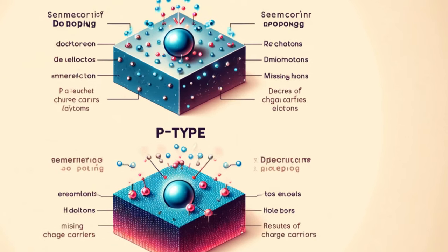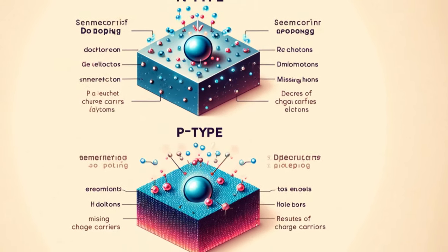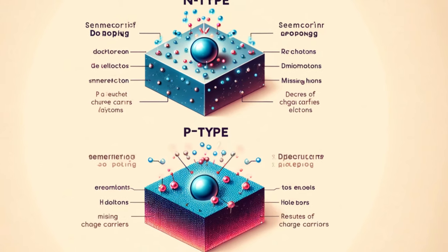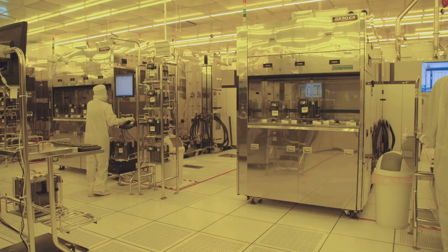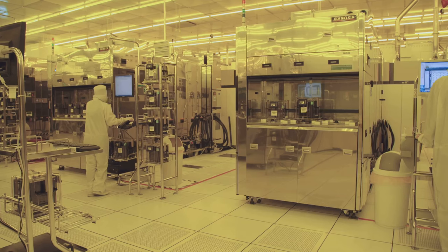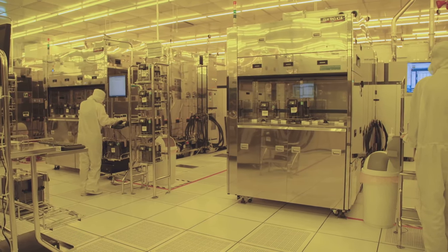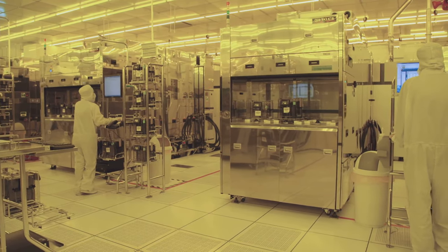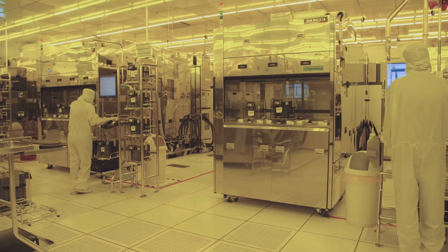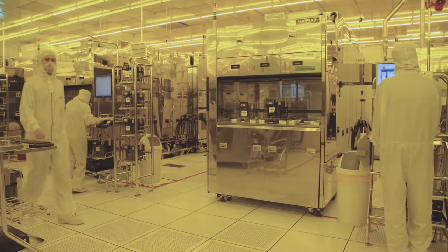The introduction of electrons or holes dramatically alters the electrical properties of the semiconductor. N-type semiconductors have an excess of negative charge carriers, electrons, while P-type semiconductors have an excess of positive charge carriers, holes.